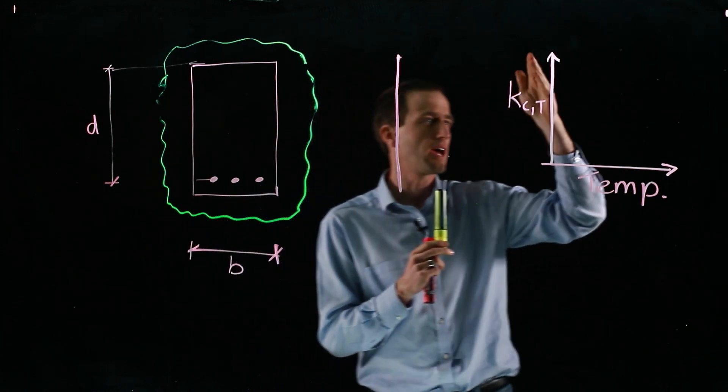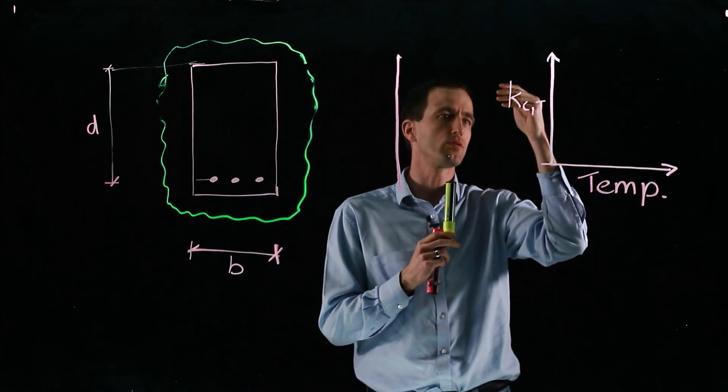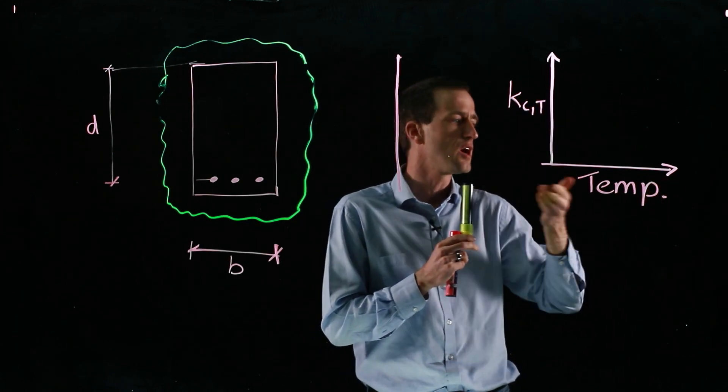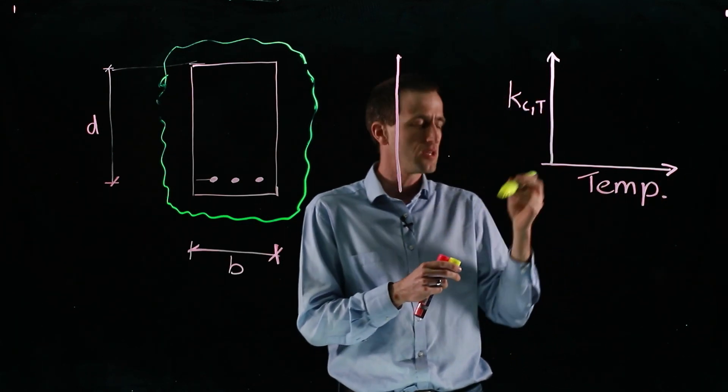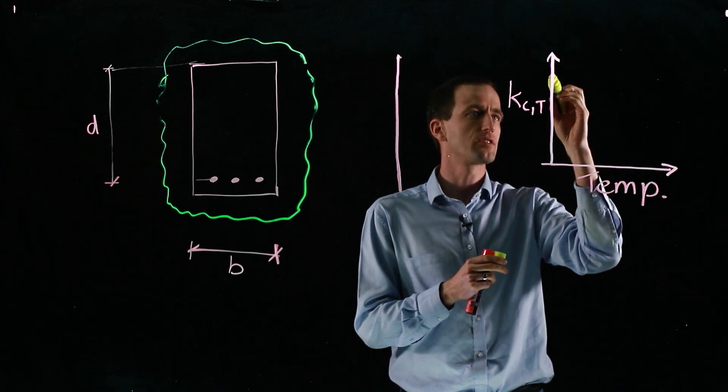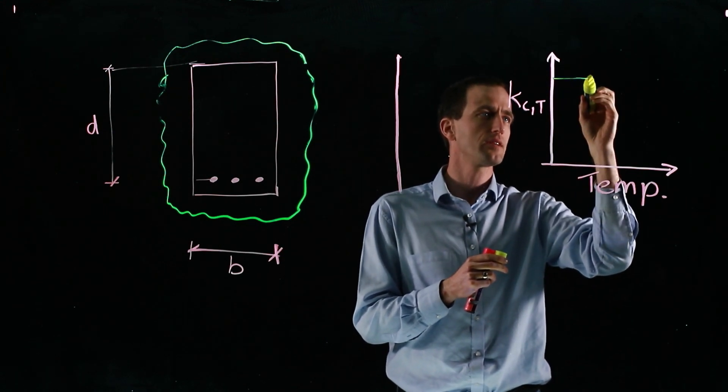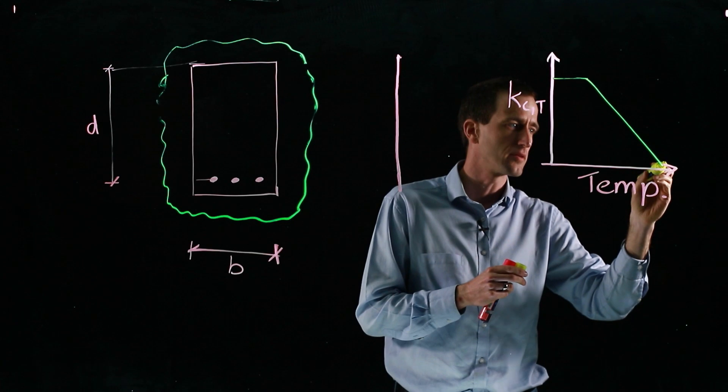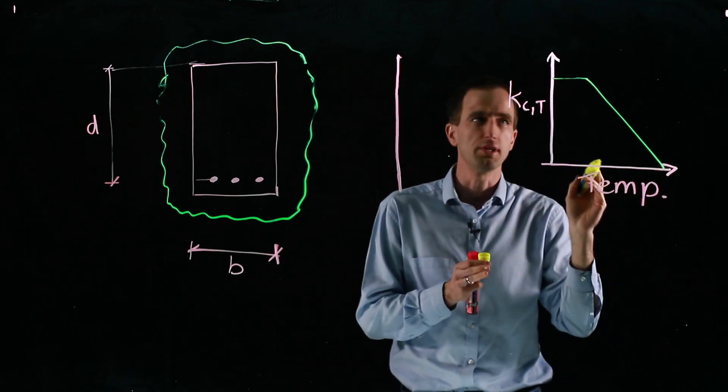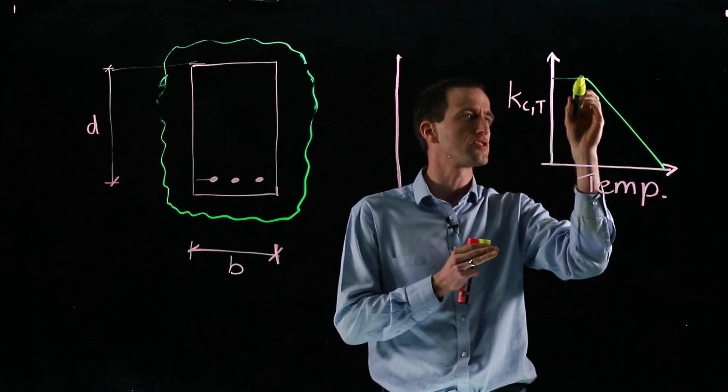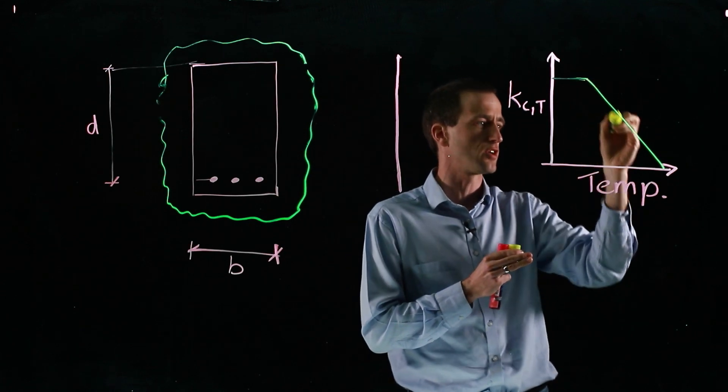If we have a look at a graph of concrete strength or the reduction factor for concrete at some temperature T with temperature, the graph for concrete can be simplified to look something along these lines. Depending on which code you're using, at around 100 to 200 degrees Celsius, it starts losing strength.